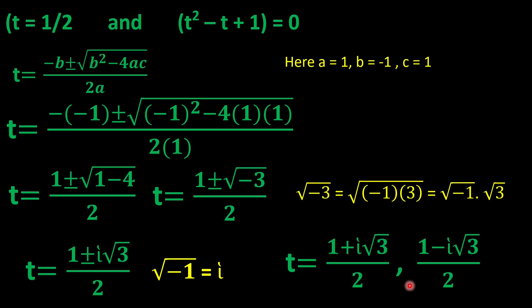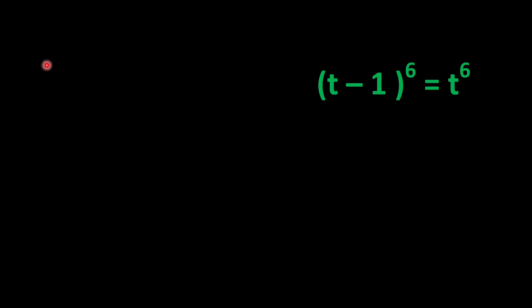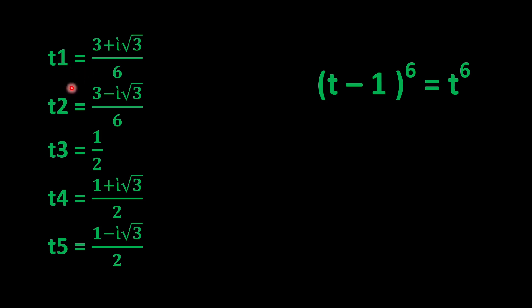Overall we have five values of t. For the given equation (t-1)^6 = t^6, the five solutions are: (3 + i√3)/6, (3 - i√3)/6, 1/2, (1 + i√3)/2, and (1 - i√3)/2. Among these, only t = 1/2 is a real solution; the other four are complex or imaginary. Please ask any questions in the comments, and subscribe for further videos.